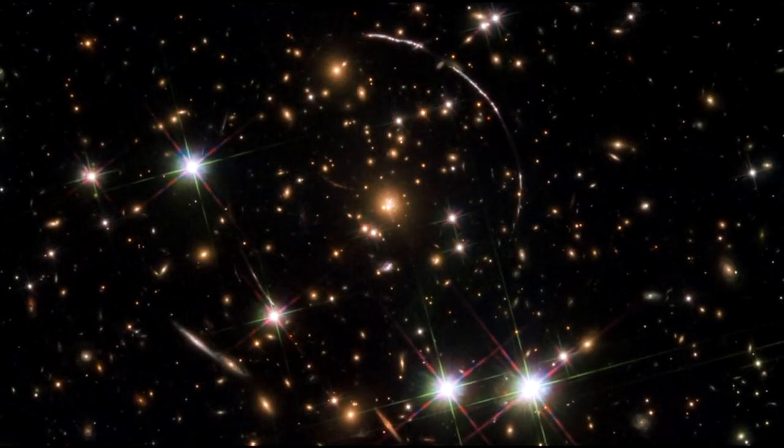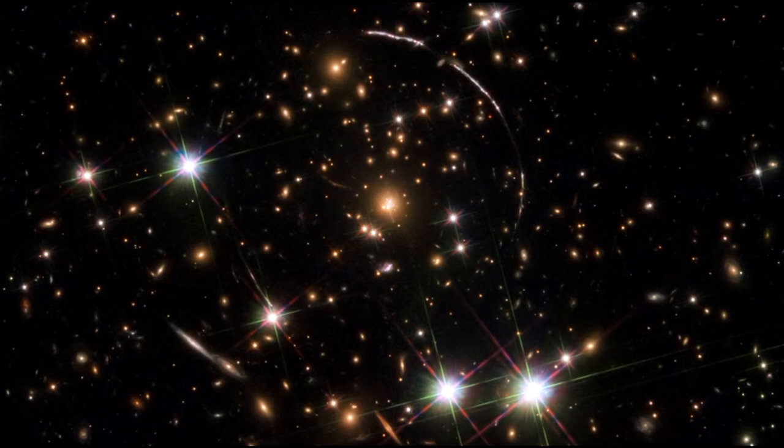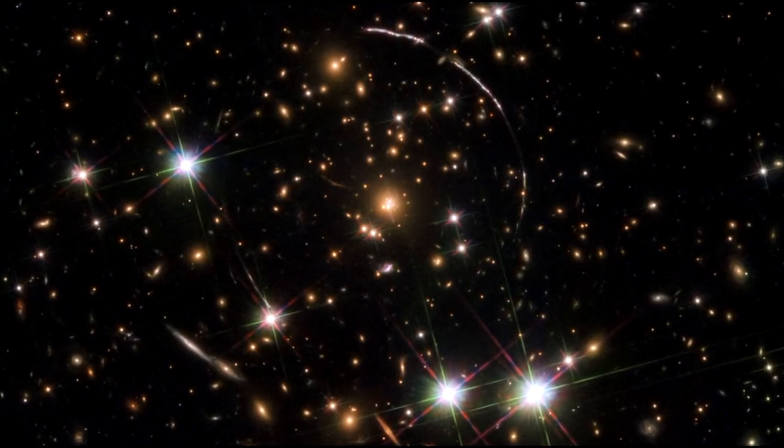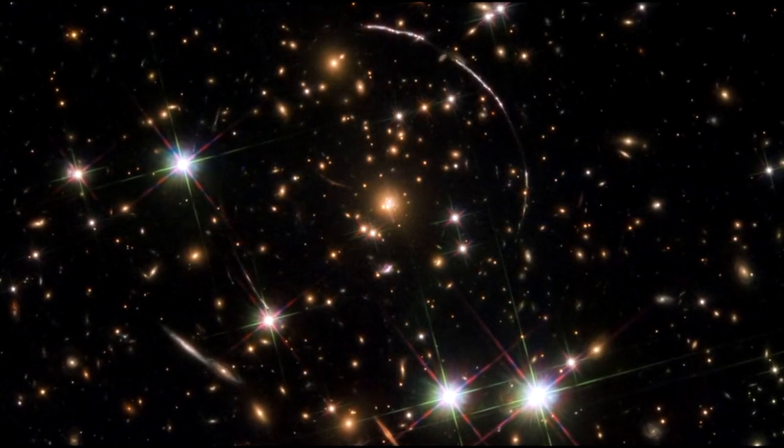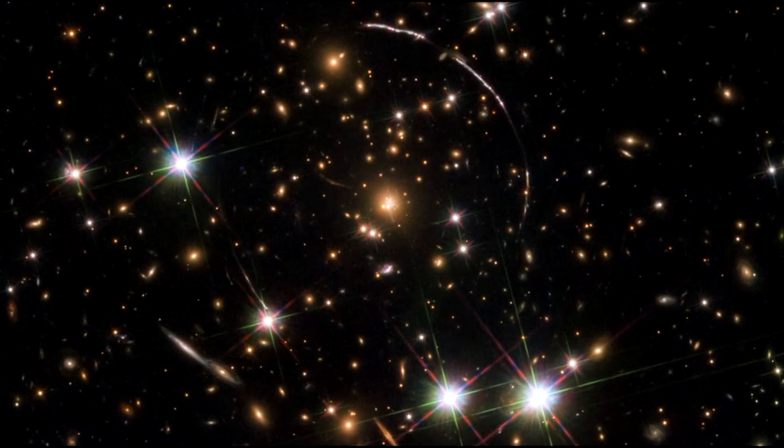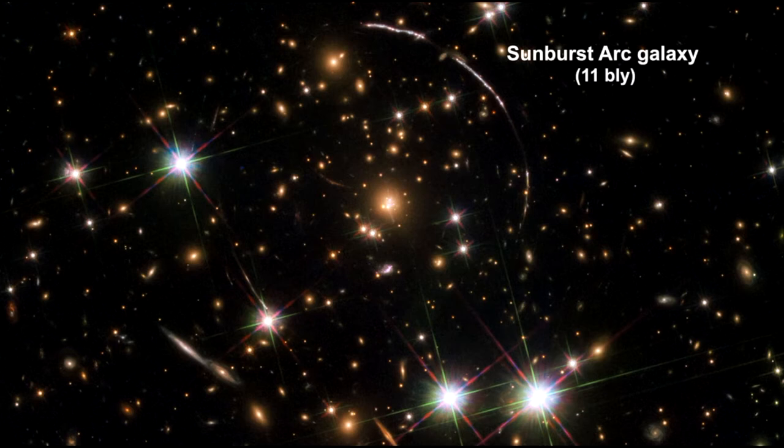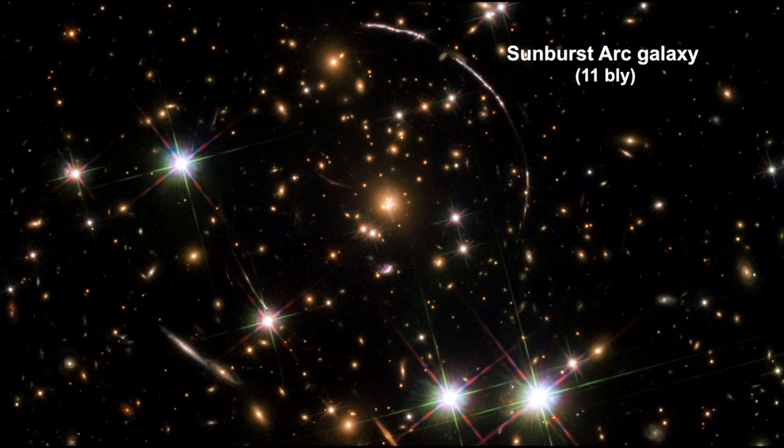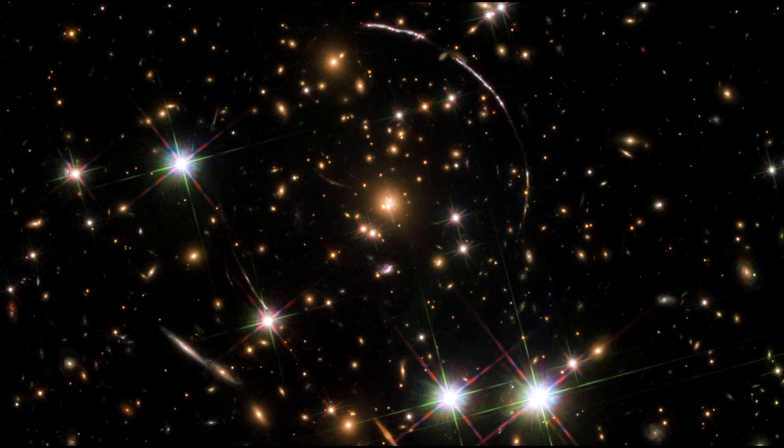This Hubble image shows a massive galaxy cluster about 4.6 billion light years away. Along its border, four bright arcs are visible. These are copies of the same distant galaxy nicknamed the Sunburst Arc. It's almost 11 billion light years away. Its light is being lensed into multiple images by strong gravitational lensing.